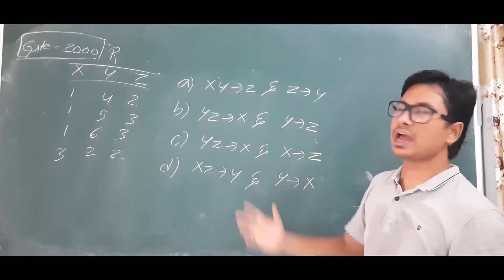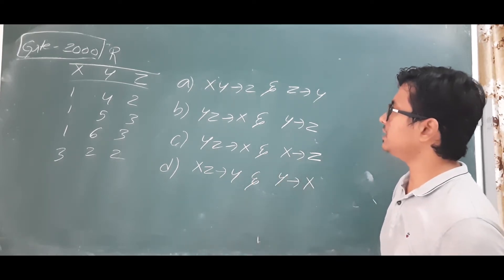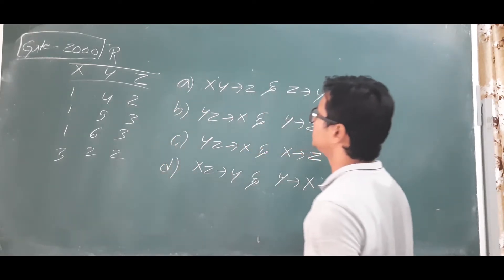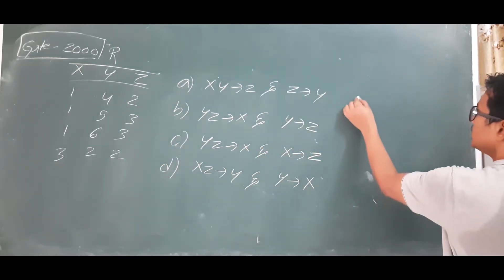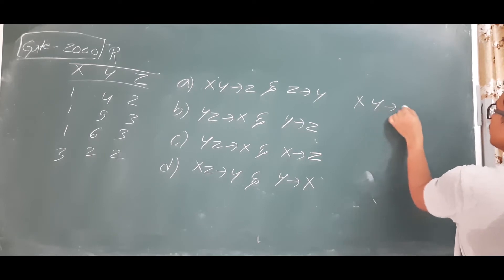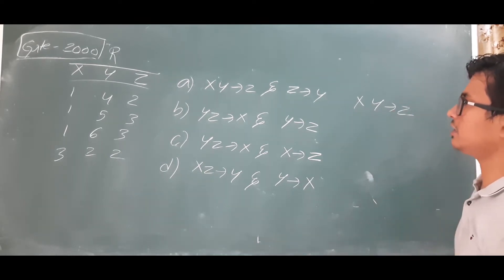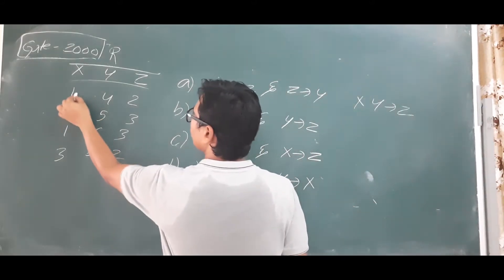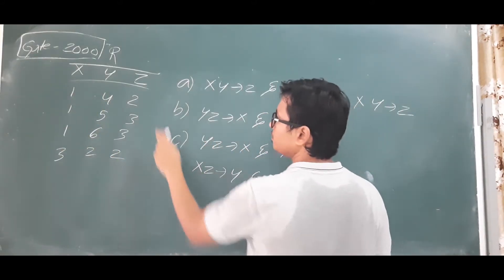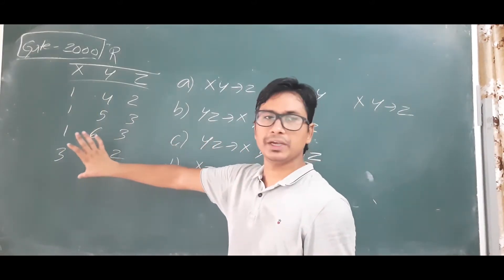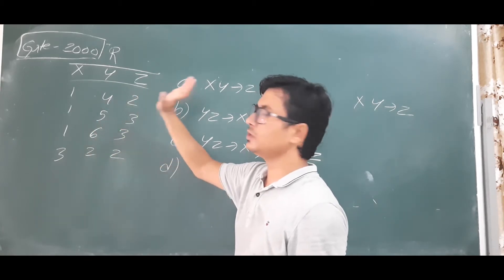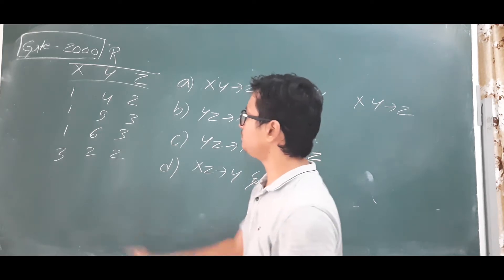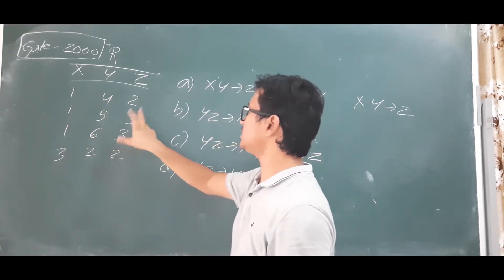They are asking which one is invariant. Suppose XY determines Z — we have to check whether XY functionally determines Z or not. Looking at the table: for (1,4) the output is 2, and (1,4) is not repeating anywhere, so for (1,4) the unique output is 2. For (1,5) it is giving output 3, and (1,5) is not repeating.